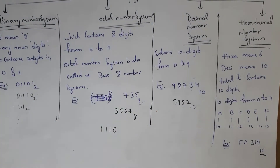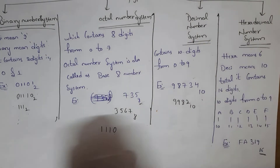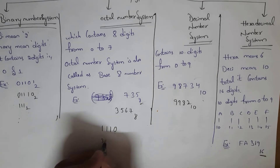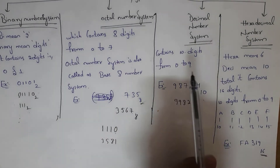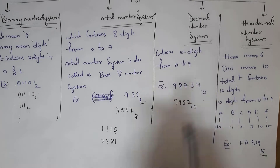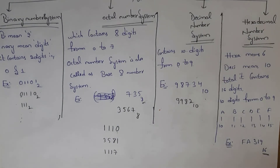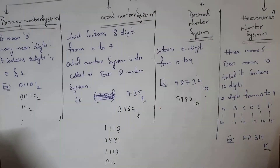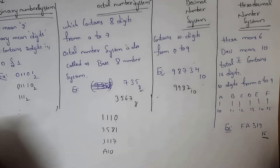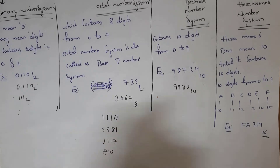For example, 1110 — we call it binary because it contains only 0 and 1. For example, 3581 — we call it decimal because it contains numbers from 0 to 9. For example, 1117 — we call it octal because numbers are between 0 and 7. And if it contains alphabet A, we call it hexadecimal.